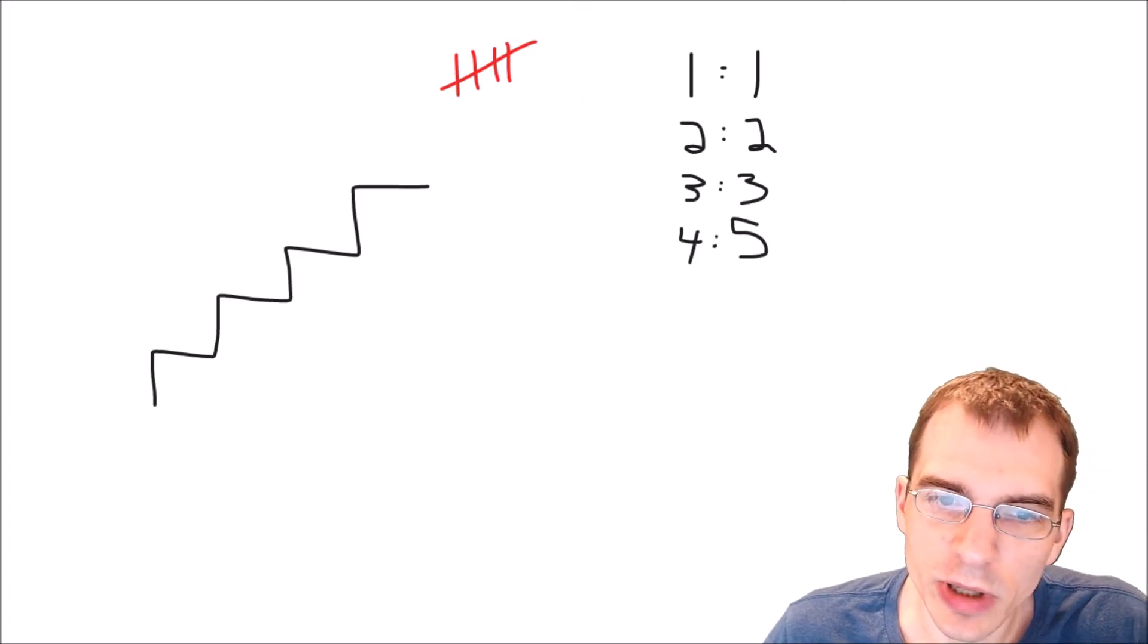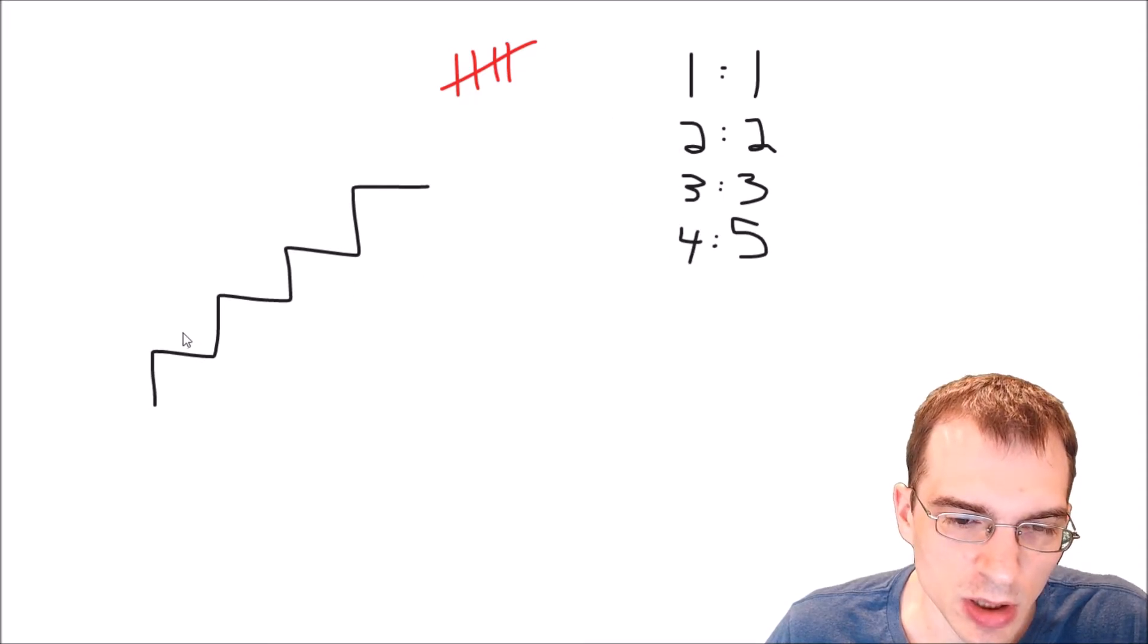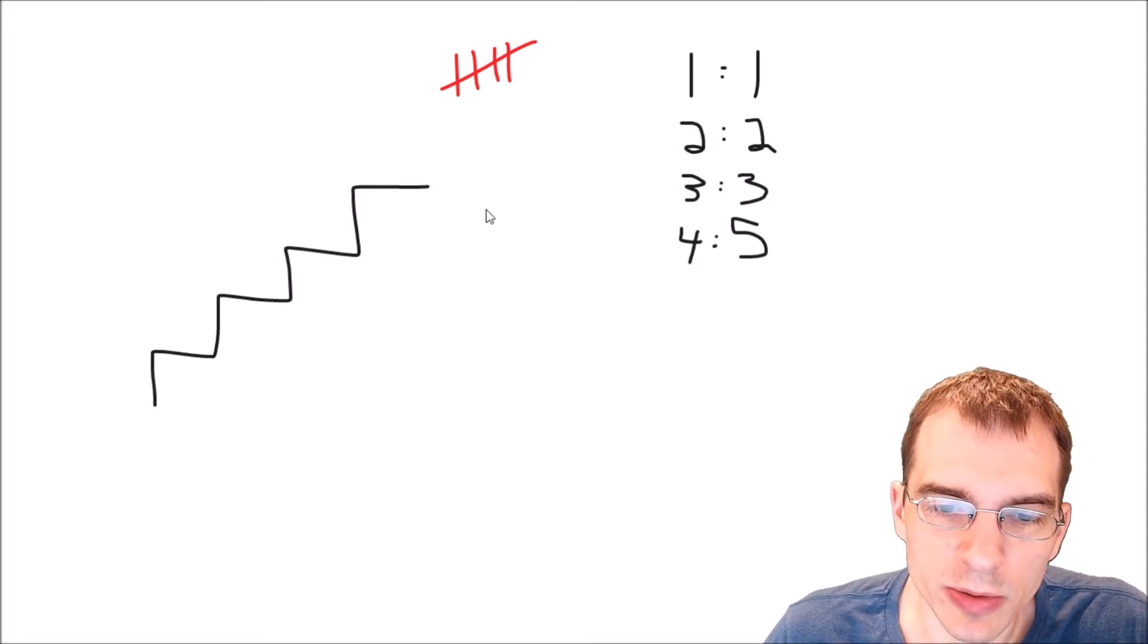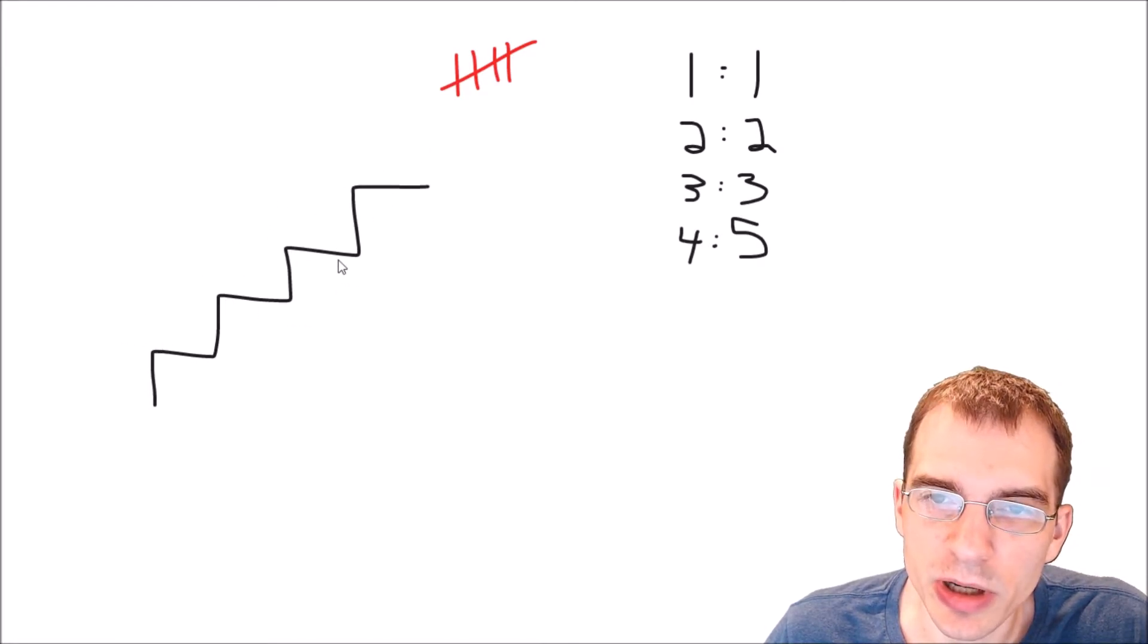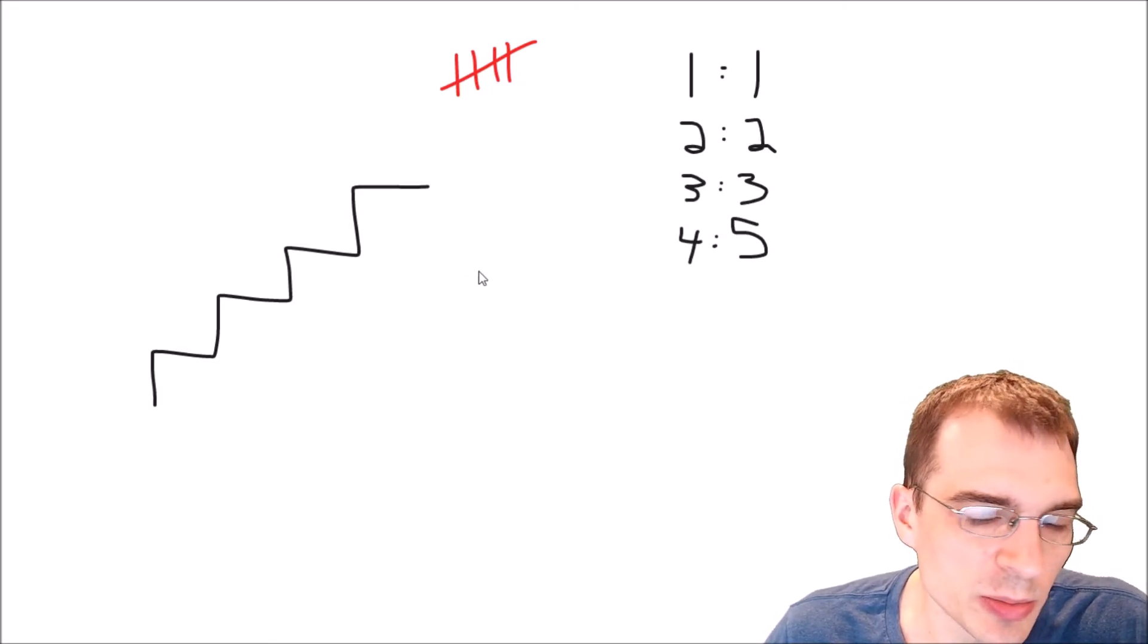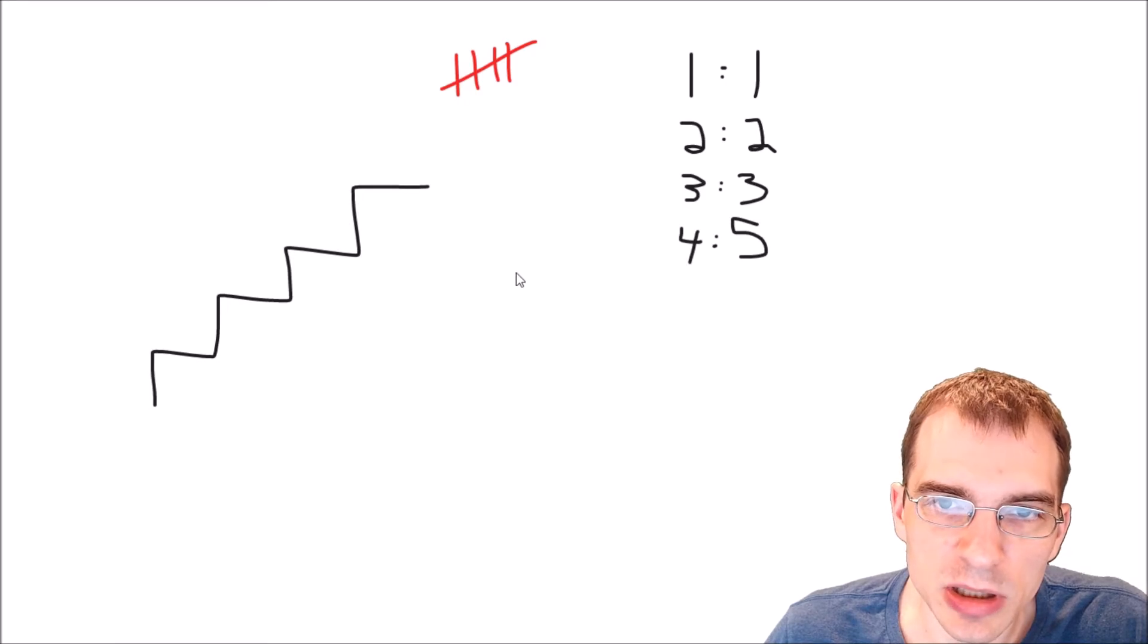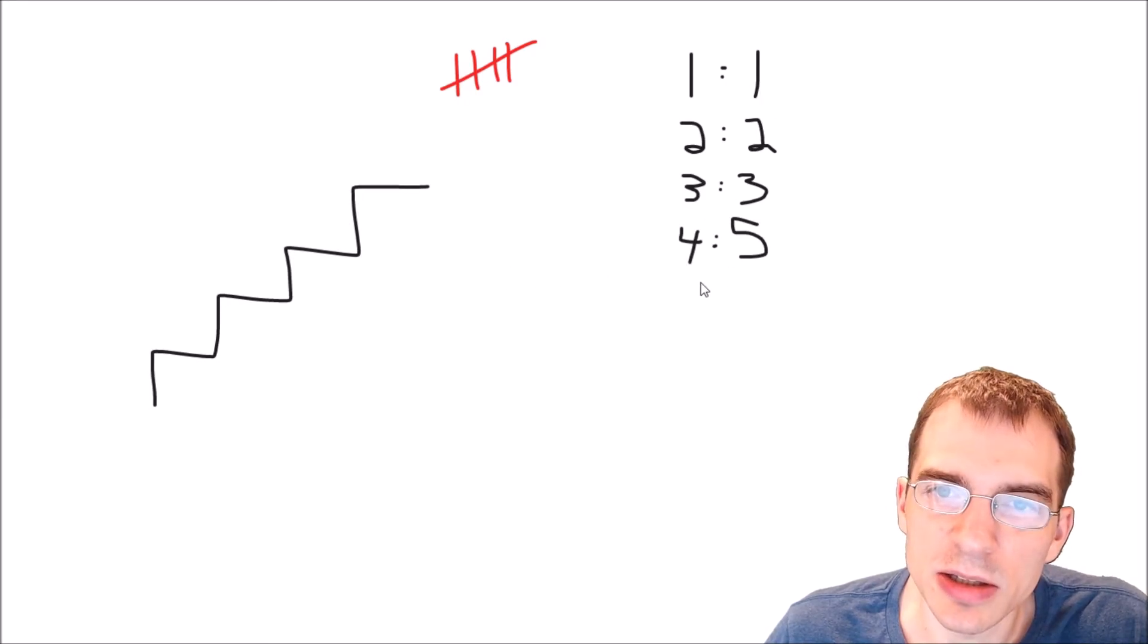So what are different ways we can think about trying to code this up? Well, we could try to do something where we actually generate every single possible sequence that gets us to the top. We could have generated those five different possibilities, just like we did by hand here. We could try to do that in code. And then after we've generated every possible sequence, we could just say how many sequences have we generated. And that would be the answer.